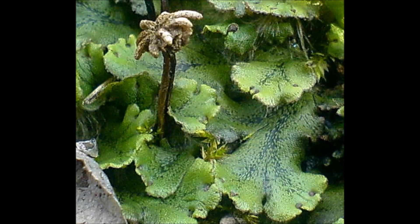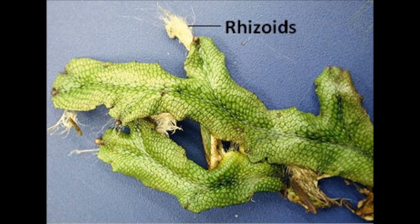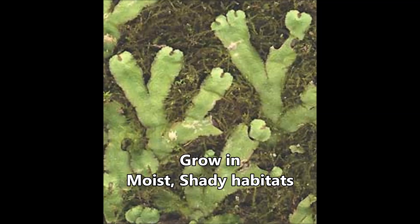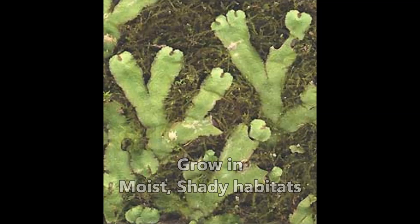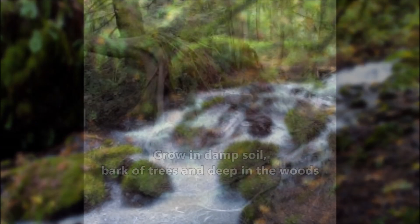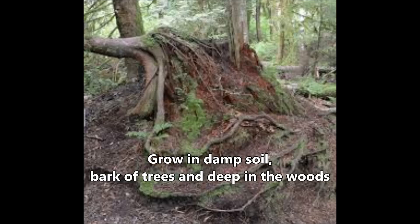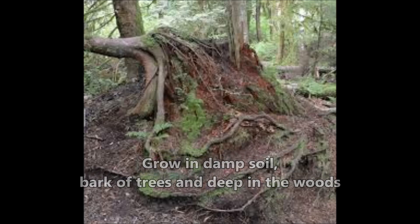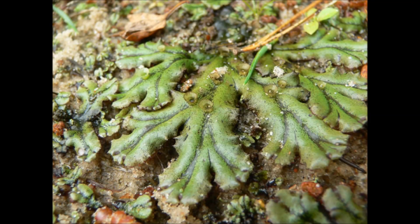The thallus is dorsiventral and closely appressed to the substrate. They have rhizoids, flattened stems with overlapping scales or leaves. They usually grow in moist, shady habitats such as banks of streams, marshy ground, damp soil, bark of trees and deep in woods. The leafy members have tiny leaf-like appendages in two rows on the stem-like structure.